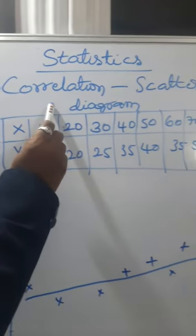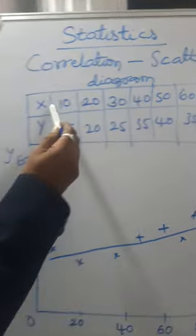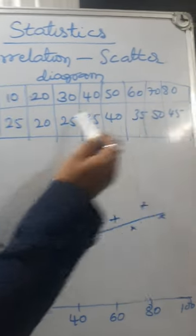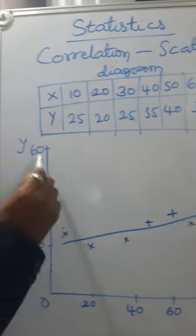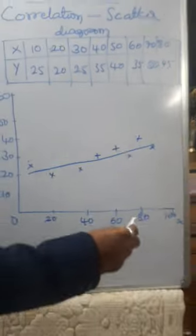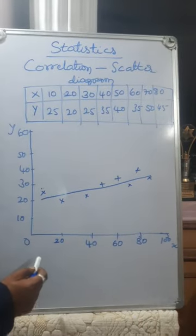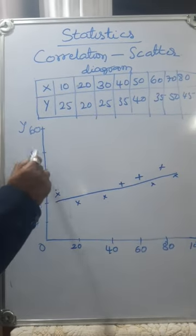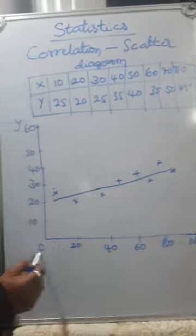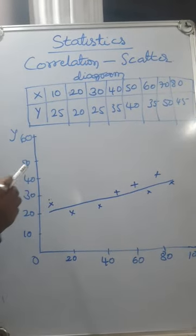This is Correlation Scatter Diagrams. The X and Y columns are already given. We have to prepare a graph scatter diagram for this X and Y. The axes are labeled O, X, and Y.